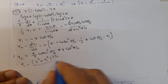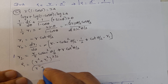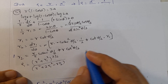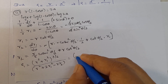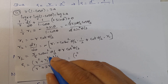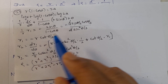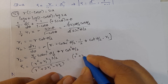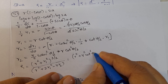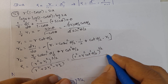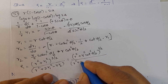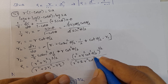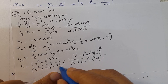Now apply the radius of curvature formula: ρ = (r² + r1²)^(3/2) / (r² + 2r1² - r·r2). Substituting: numerator is r² + r² cot²(θ/2) all to the power 3/2, denominator is r² + 2r² cot²(θ/2) minus r times r2.